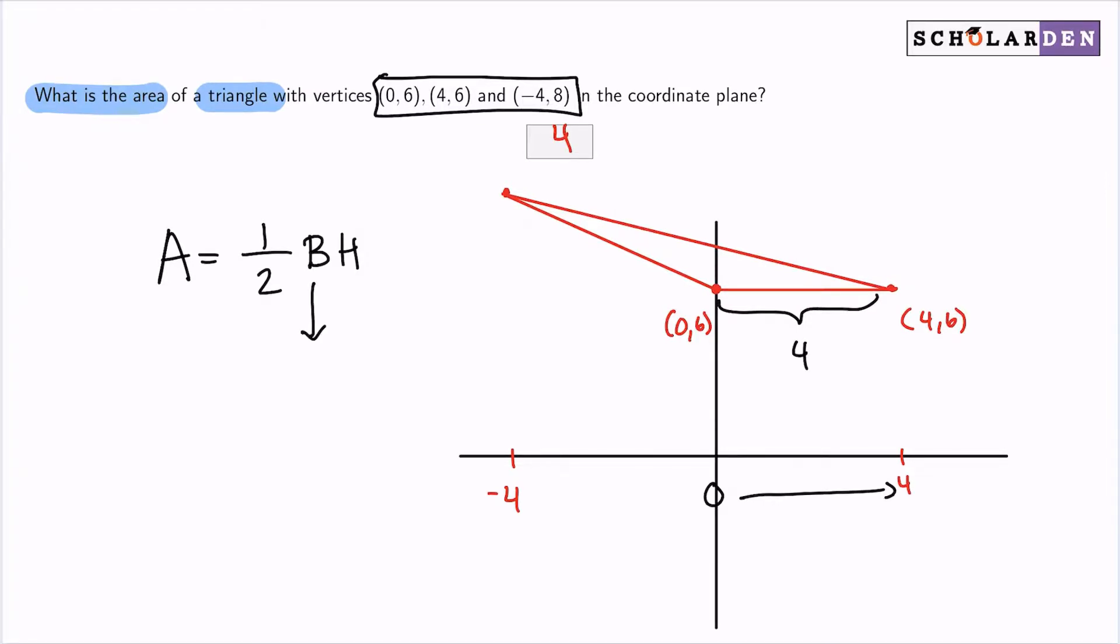So I know that my base is 4. I just need to figure out what my height is now. This point over here was (-4,8). The height is determined by the y-coordinate, right? So we're going from 6 to 8. The difference between 6 and 8 is 2, so I know that my height will be 2.